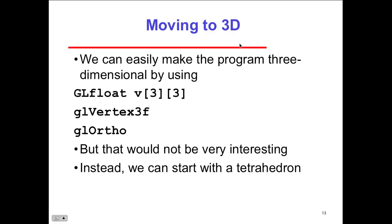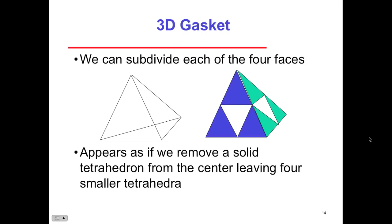So moving into 3D, we can easily make the program three-dimensional by using the GLfloat v, the 3, 3 vertex, and then creating a viewport. This is our camera actually, our ortho, our GL ortho, which is giving us our z is equal to zero default viewport. But that would be very interesting. Instead, we're going to start with a tetrahedron. I'm going to start with a different one. Because actually if we drew that two-dimensional and the three-dimensional, it's going to look two-dimensional.